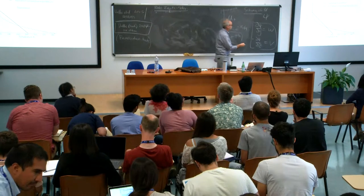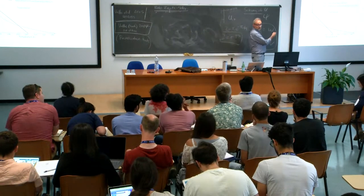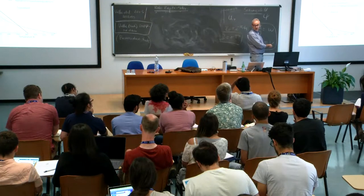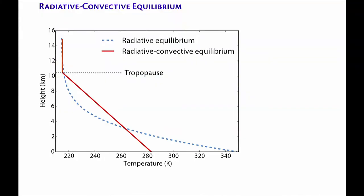As well as a balance at the top of the atmosphere to get the outgoing radiation equal to the incoming, there has to be a surface energy balance. And once you satisfy the surface energy balance, that determines where this intercept is. Then given the lapse rate, it determines where the tropopause is.